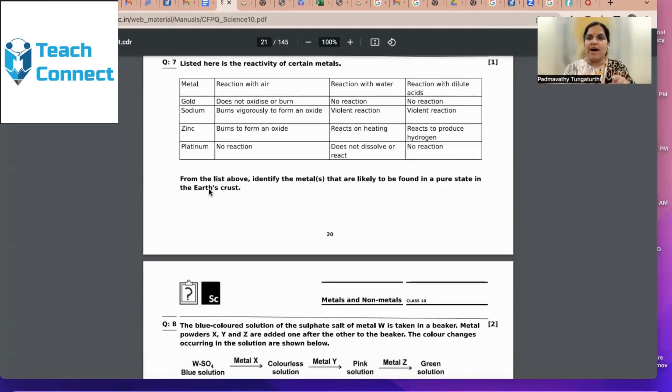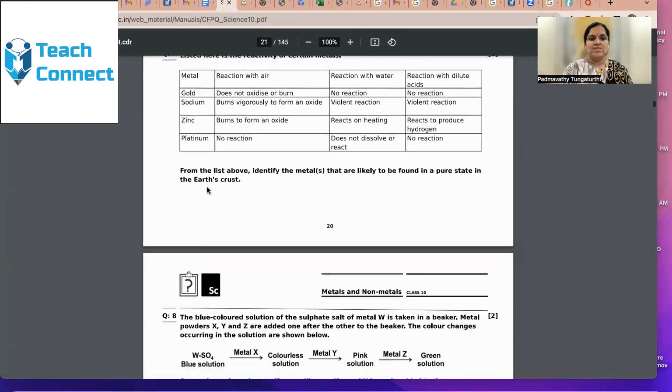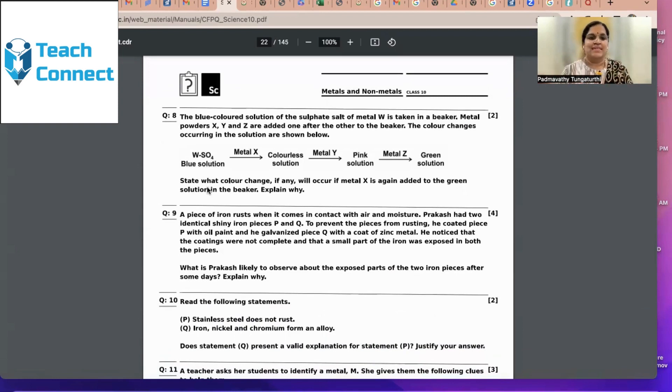From the list above, we are not supposed to consider all the elements from the syllabus. Here, these are the four elements given. Identify the metal or the metals. Now, this is a challenge here. Metal or the metals that are likely to be found in a pure state in the Earth's crust. Pure state. Now, what element remains in pure state? Continuously check. Read it. Underline the statement. Ask children to underline these important words. Then see that gold and platinum, they do not react. That means they are available in pure state.